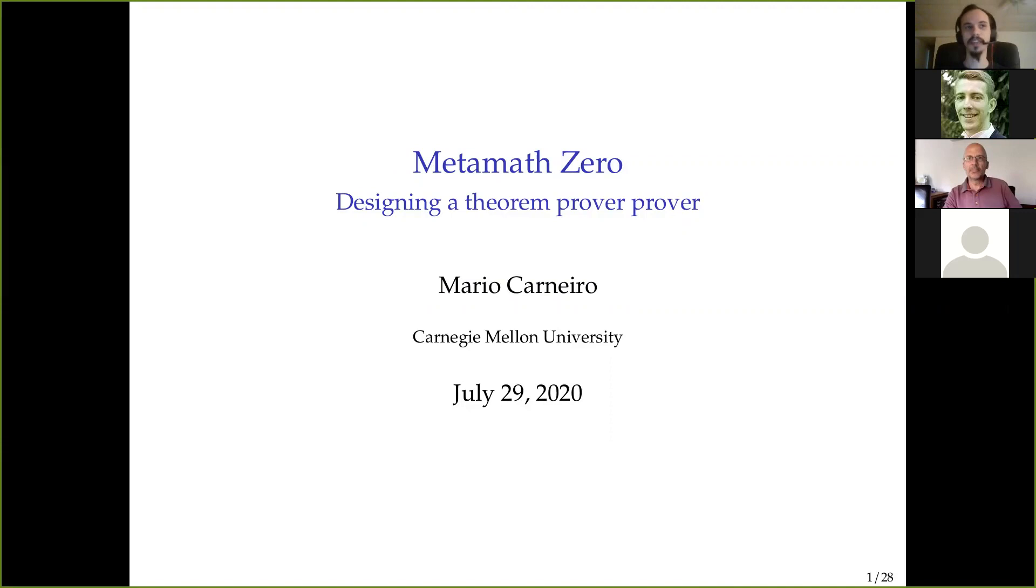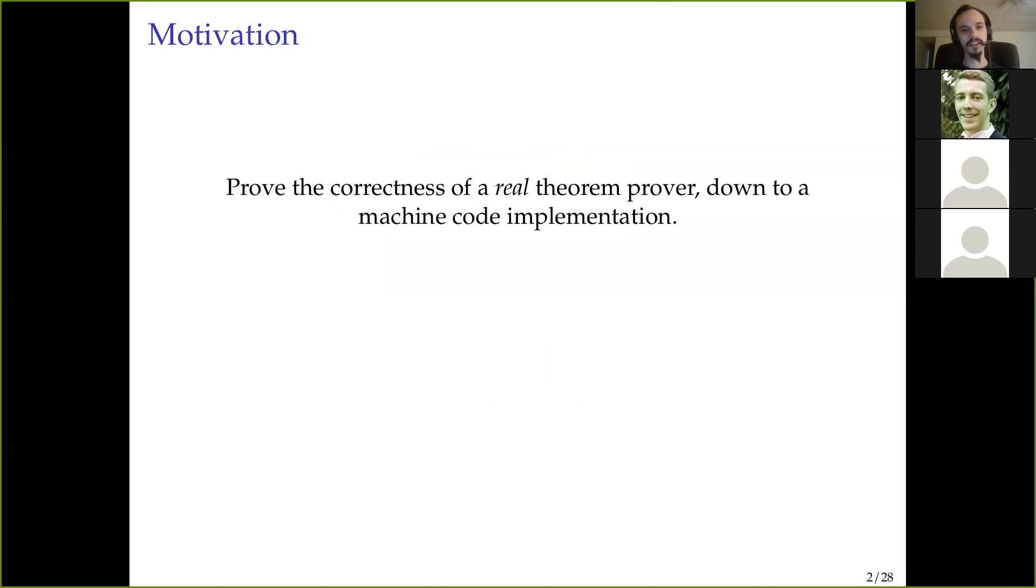So yeah, the title of this talk is Designing a Theorem Prover Prover. I'm going to explain what that is. The idea here is to prove the correctness of a real theorem prover down to a machine code implementation. I emphasize the word real here because it's really something that we can actually connect to the ones that have been used with the big libraries, those sorts of theorem provers. That's the goal.